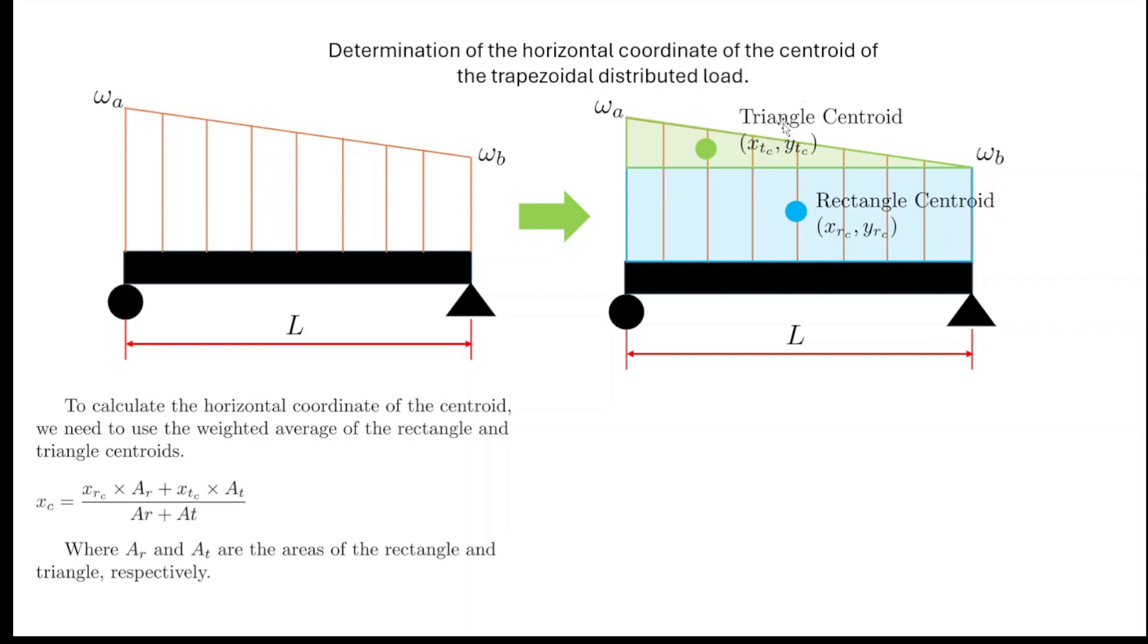We already know where the centroid coordinates are for the rectangle and the triangle. So we can do that. And then after having those two pieces of information, we could use the weighted average of both our positions to determine what is the final centroidal horizontal coordinate of the trapezoid here.